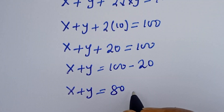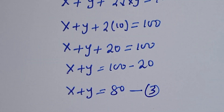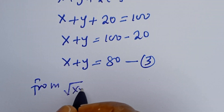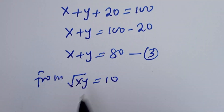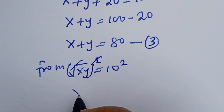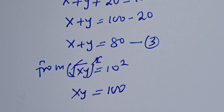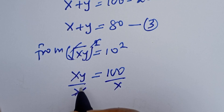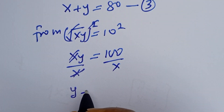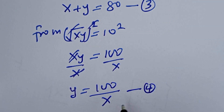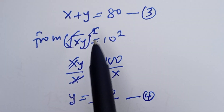Let's call x plus y equals 80 equation 3. Also from equation 2, square root of xy is equal to 10. Squaring both sides, the square roots cancel and we get xy is equal to 100. Now let's make y the subject of the formula: divide both sides by x, giving y is equal to 100 over x. Let's call this equation 4.